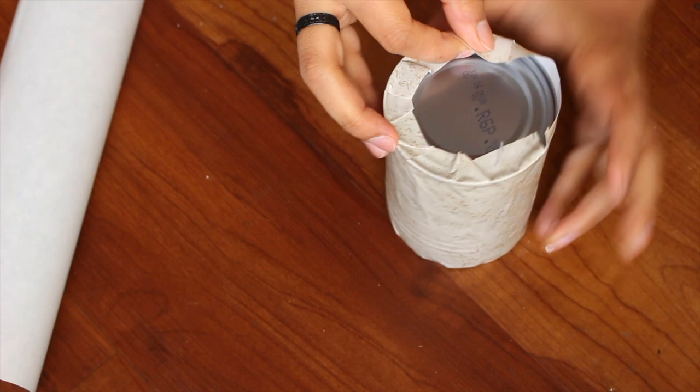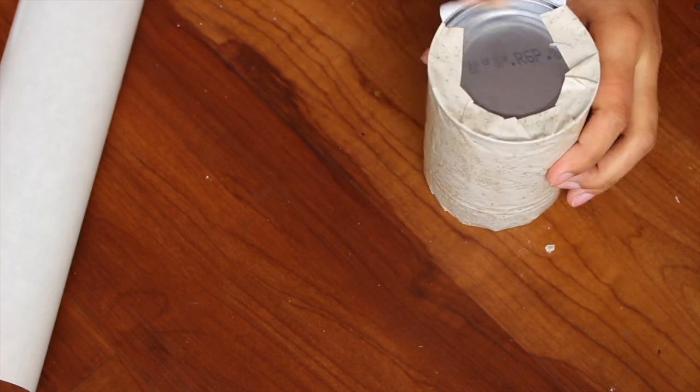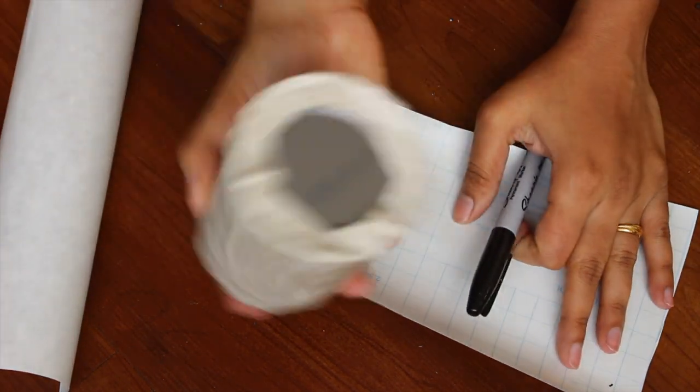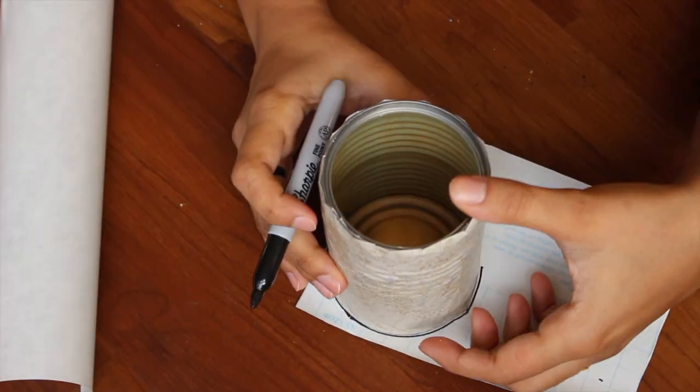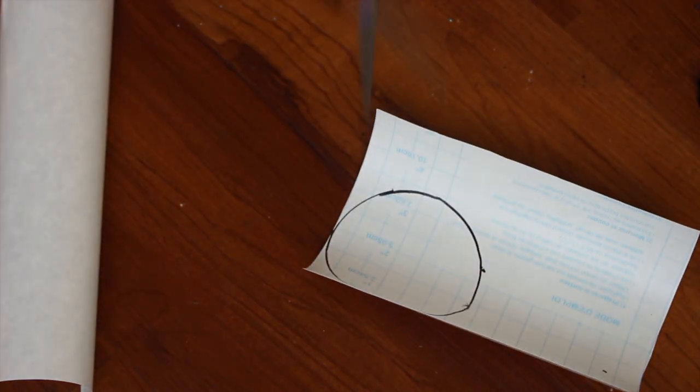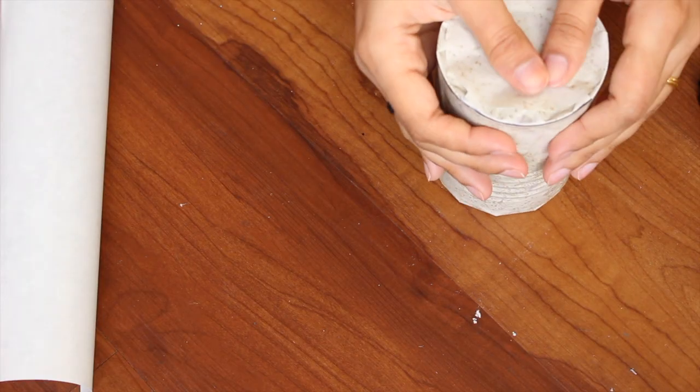I have left the inside of the tin can as it is. I just attached some contact paper on the outside. For the bottom, I have cut some round pieces from the same contact paper and attached it like this.